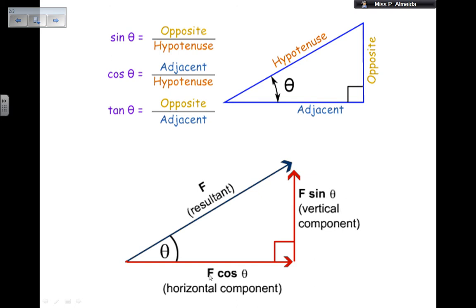And then why is F cosine of theta the horizontal component? Because that's my adjacent side. I know that cosine of an angle is the adjacent over the hypotenuse. So, adjacent is going to be the hypotenuse times the cosine of the angle. So, I have F, the hypotenuse, times the cosine of the angle.